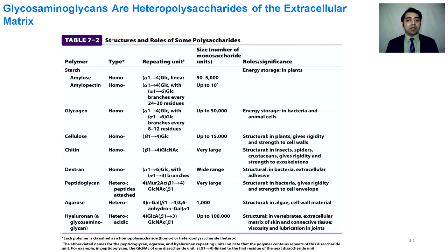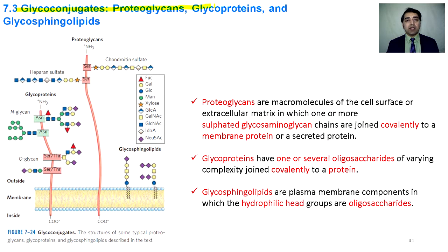A summary table shows the structure and roles of some polysaccharides. Glycogen is a homopolysaccharide used to store energy in bacteria and animals. Chitin is a homopolymer that gives structure to insects and spiders. Agarose is a heteropolysaccharide that is a structural component in cell wall material. Glycoconjugates include proteoglycans, glycoproteins, and glycosphingolipids.